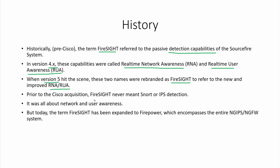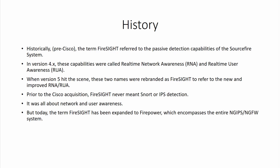After Cisco acquired Sourcefire, there is something called the Snort process, which is the main part of the FTD. The Snort process is the main engine for FTD or IPS detection, which we will cover later in this course. Before the acquisition, Sourcefire did not have this technology — it was all about network and user awareness with no capability for blocking or filtering traffic. Today, Firesight has been expanded into Firepower, which is now known as the Next Generation Firewall or Next Generation Intrusion Prevention System, and these have been expanded to different devices.